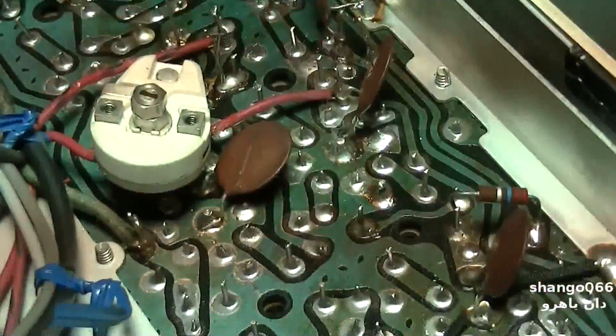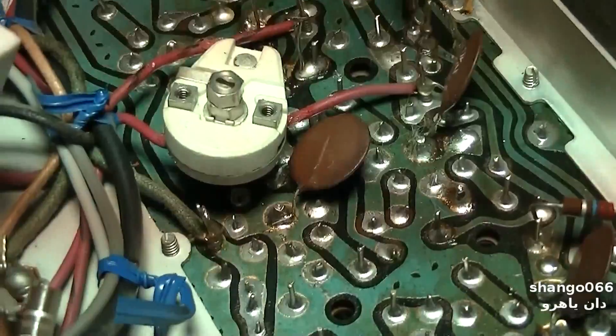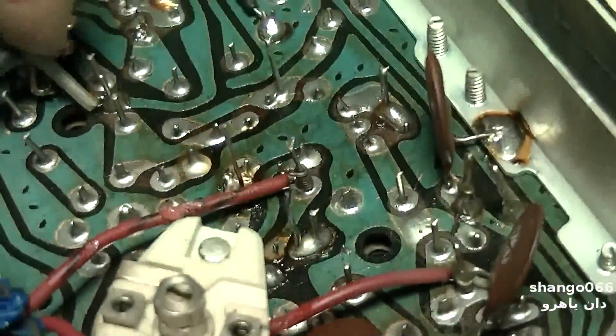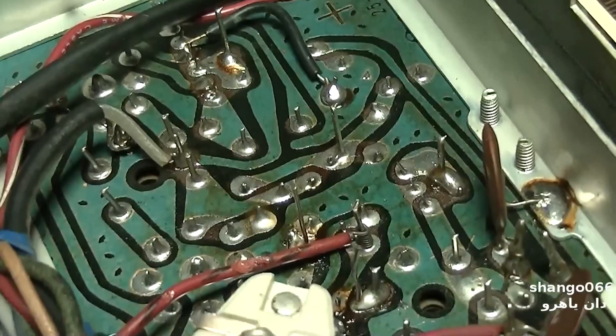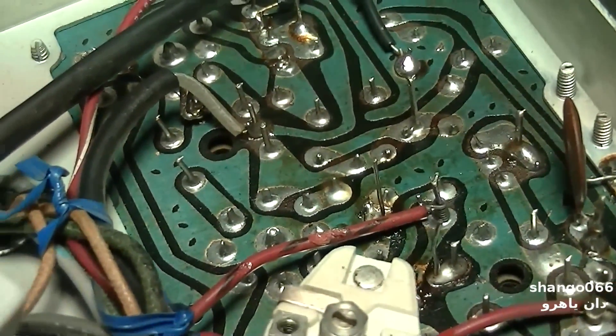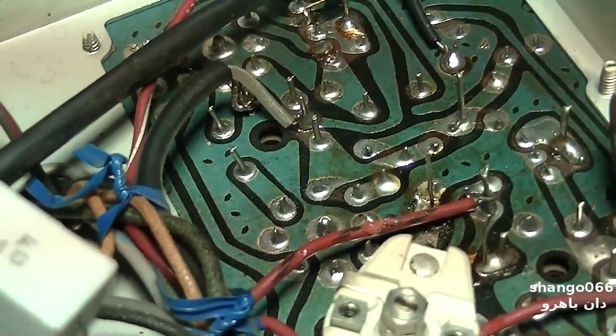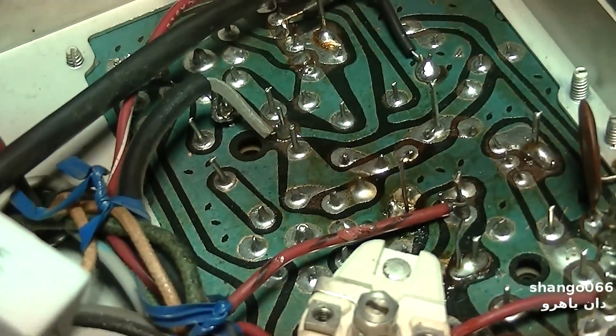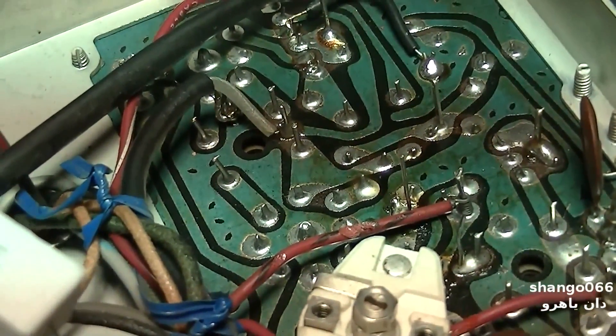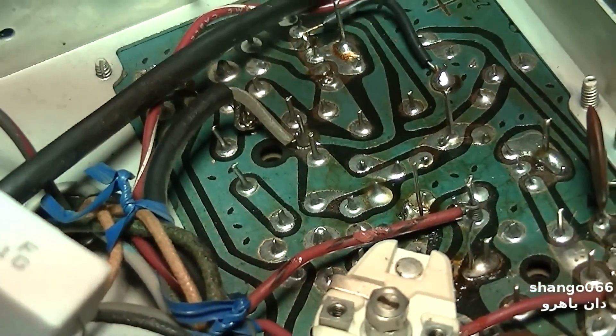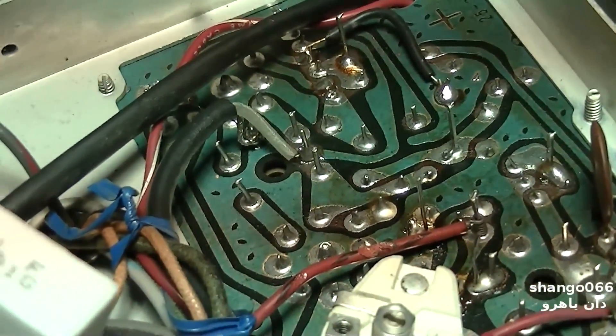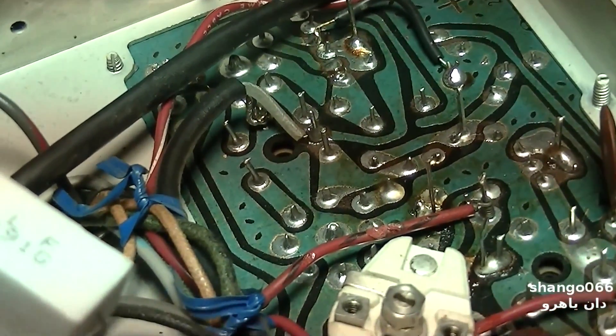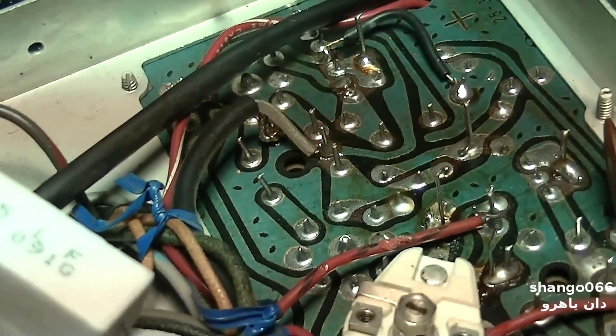So the first thing I need to do is remove the IF transformer. And it looks like this one has some stuff. This is actually the discriminator transformer, so this one's a little bit different when it comes to the alignment steps. There's two alignment steps: peaking and then zeroing, and we'll go through that. But the first thing I'm going to do is pull the IF transformer. Then I'm going to remove the internal capacitors. Then we'll find the value.